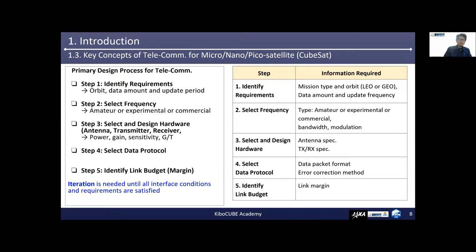The frequency allocation process consists of internal coordination and domestic coordination. In the internal coordination, the CubeSat project must contact ITU (International Telecommunication Union) and/or IARU (International Amateur Radio Union). The domestic ministry or domestic organization, like a local bureau of telecommunications, will support your frequency allocation process. Please contact them as early as possible.